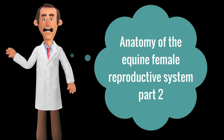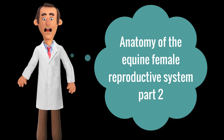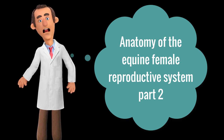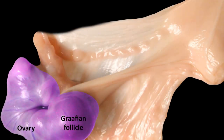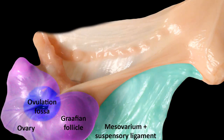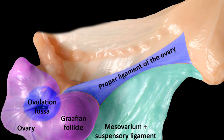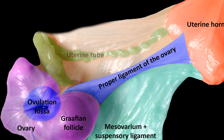Hello everyone and welcome back to another anatomy tutorial where we are going to continue talking about the equine female reproductive system. In the previous anatomy tutorial we talked about the anatomy of the ovary and the surrounding structures, including the mesovarium and the suspensory ligament of the ovary. The proper ligament of the ovary extends between the ovary to the tip of the uterine horn. We talked also about the uterine tube and its parts, including the infundibulum, ampulla.